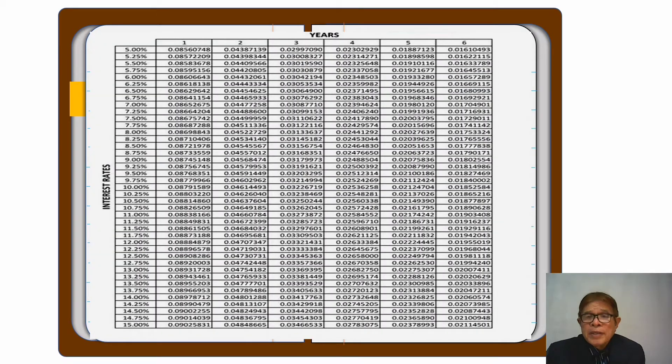For example, you have searched this factor table from Google. And for this example, it is only up to 6 years. But you can have a factor table up to 30 years if you want.